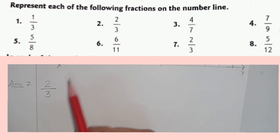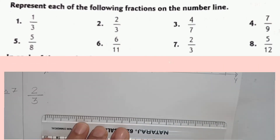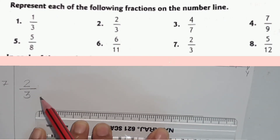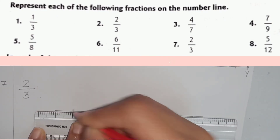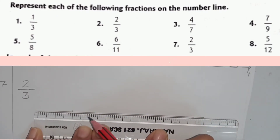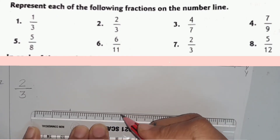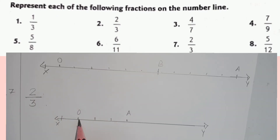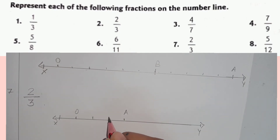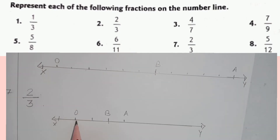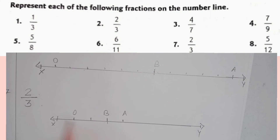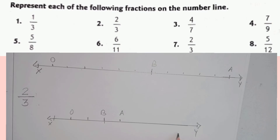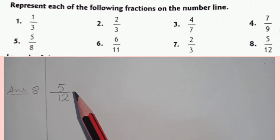Question number 7 is 2 by 3. Again, we will draw a number line and mark two points O and A on this number line XY. The denominator is 3, so we can take it as 3 units apart. We will divide OA into 3 equal parts. Out of 3 equal parts, we will consider 2 parts because the numerator is 2. At the end of the second part, we will name this point as point B. Therefore, OB will represent the fraction 2 by 3 on this number line.